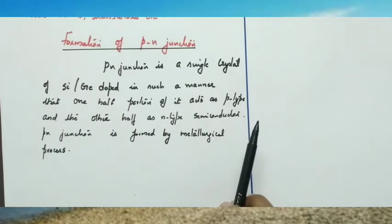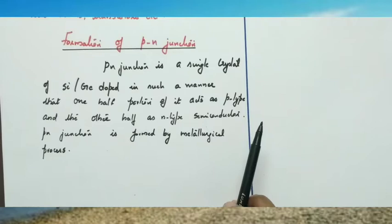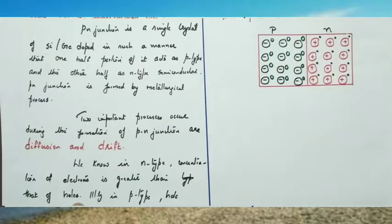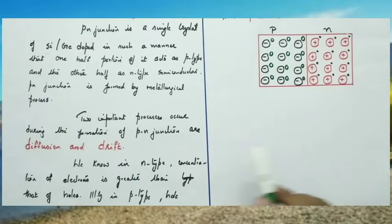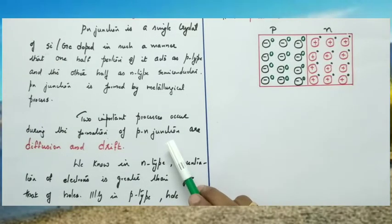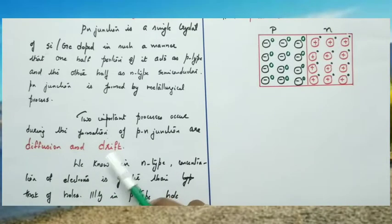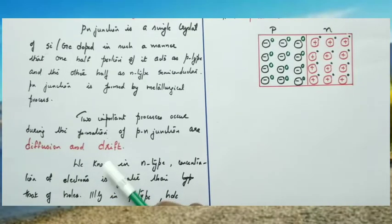It cannot be obtained by simply placing a P type semiconductor and N type semiconductor closer together. It is formed by a metallurgical process. Two processes occur during the formation of a PN Junction — they are diffusion and drift.